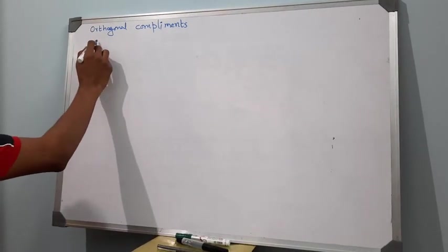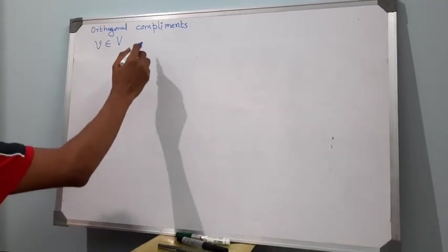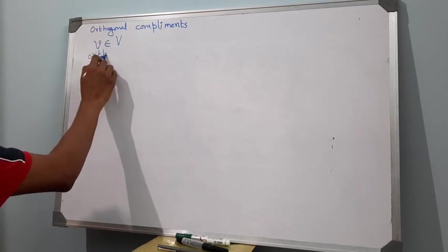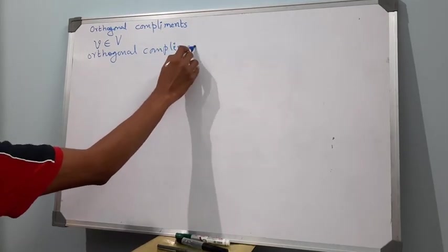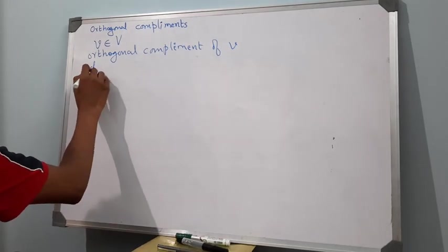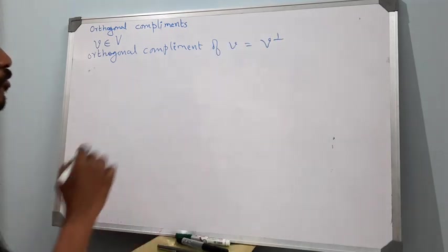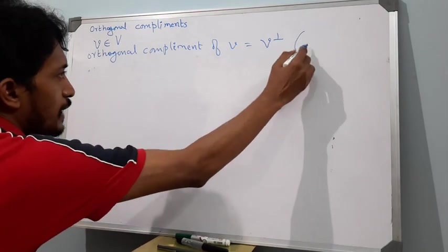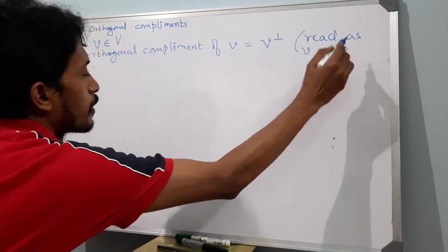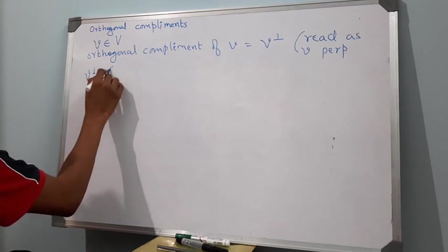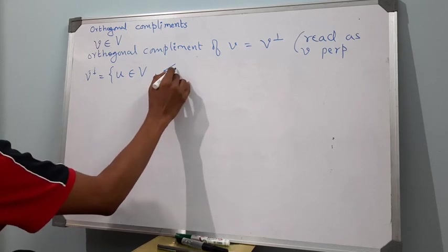If you consider a vector v in a vector space V with a defined inner product, the orthogonal complement of v is denoted by v with a perpendicular sign and it is read as v perp. This v perp is a set of all vectors in V which are orthogonal to v.